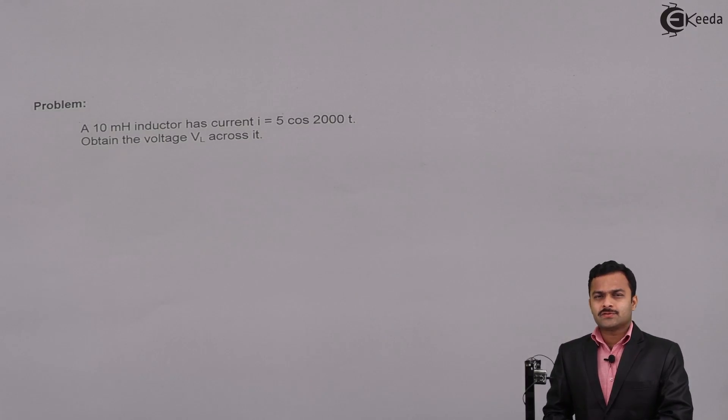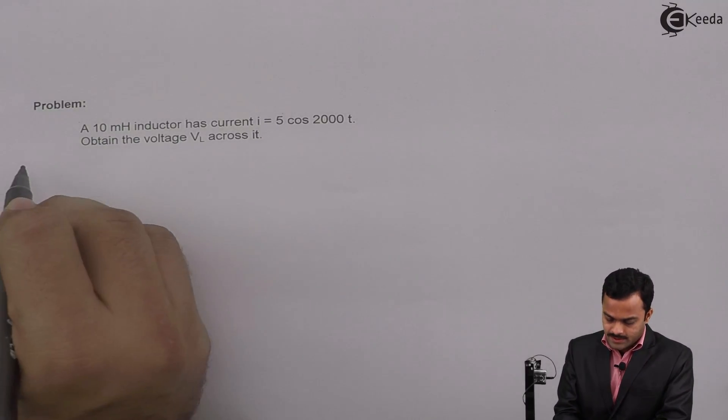Hi friends, in this video we are going to see if a current is passing through a pure inductor, what will be the voltage across it. The problem statement is: a 10 millihenry inductor has current I equal to 5 cos 2000t. Obtain the voltage VL across it. It's a very simple problem, so let's solve.